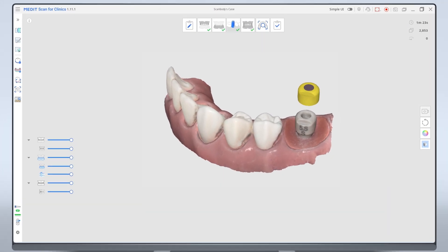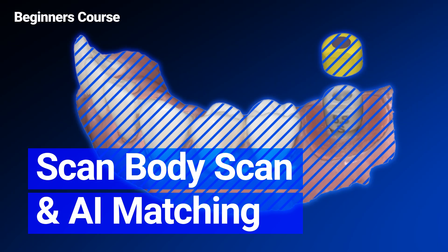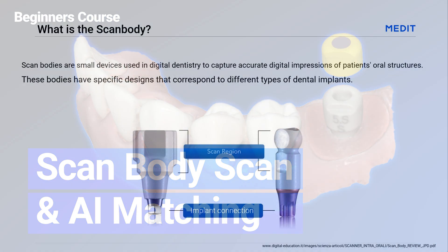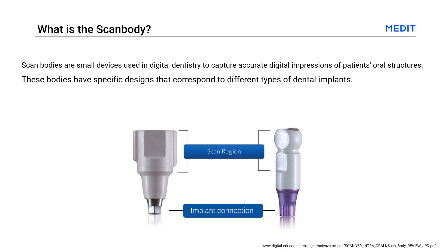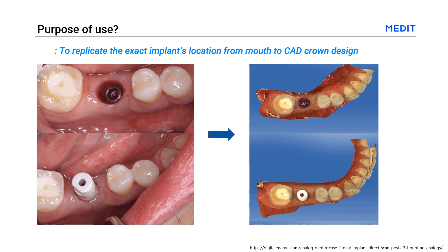This is a quick demonstration on how to scan the scan body and use AI matching. Scan bodies are small devices used in digital dentistry to capture accurate digital impressions of patients' oral structures. These bodies have specific designs that correspond to different types of dental implants. They are used to replicate the exact implant's location from the patient's mouth to the CAD crown design, just like conventional impression coping.